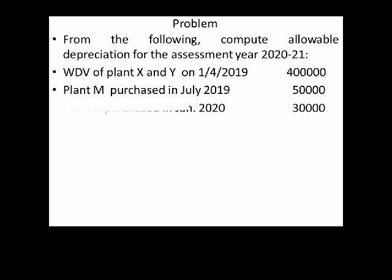From the following, compute allowable depreciation for the assessment year 2020-21. Written down value of plant X and Y on 1-4-2019 is 4,00,000. There are two plants here.